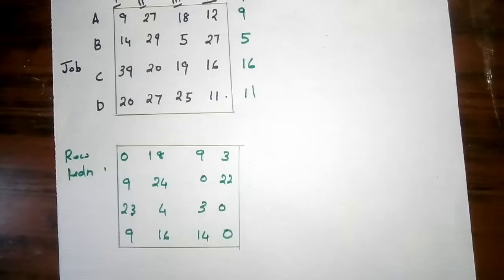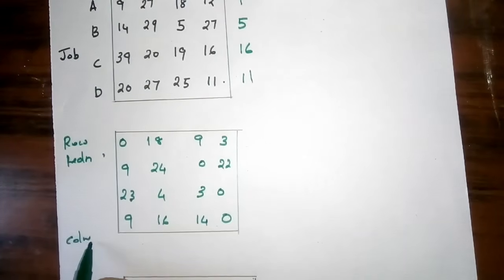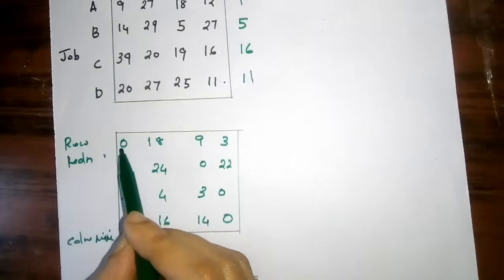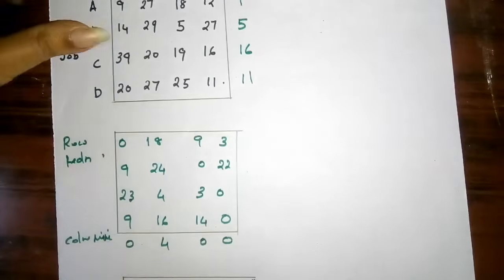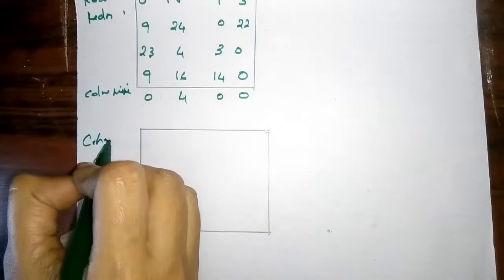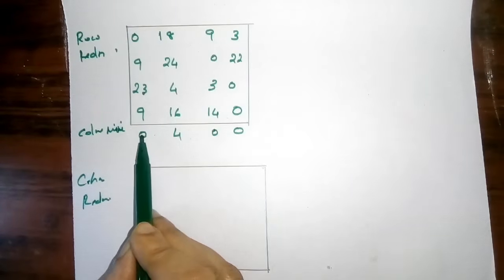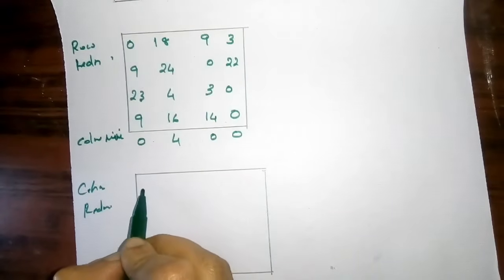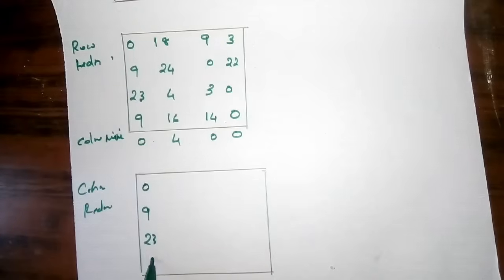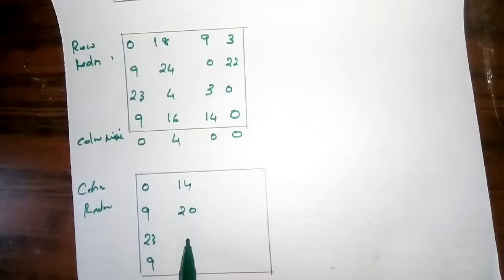The next step is column reduction, which finds the column minimum. The column minimum value for the first column is 0, and for another column it is 4. We subtract the column minimum from each value in that column. After subtracting, we get values such as 0, 5, 14, 20, 0, and 12.